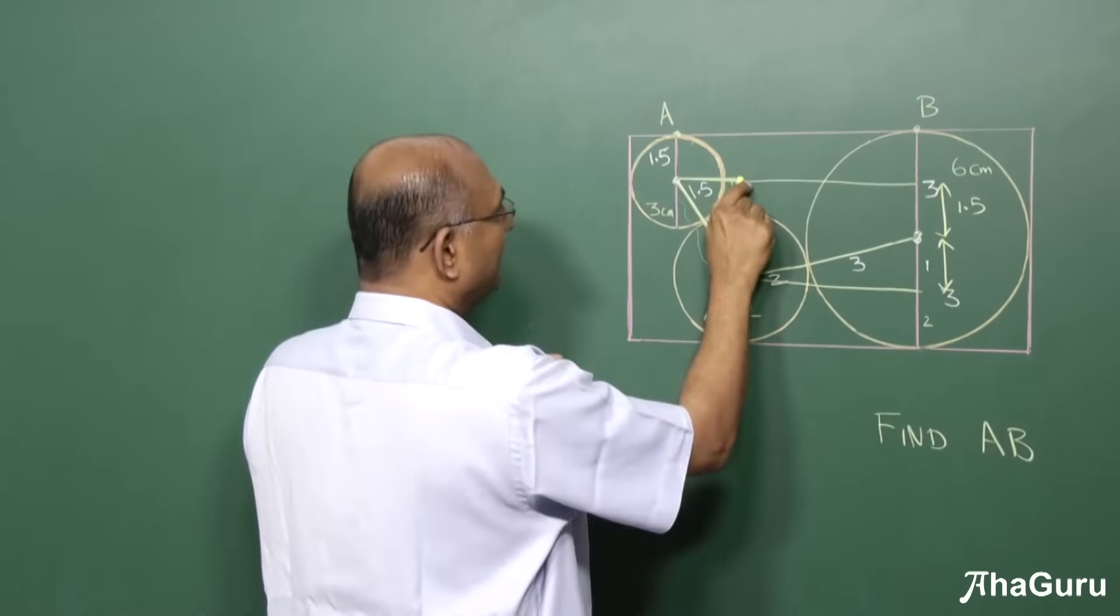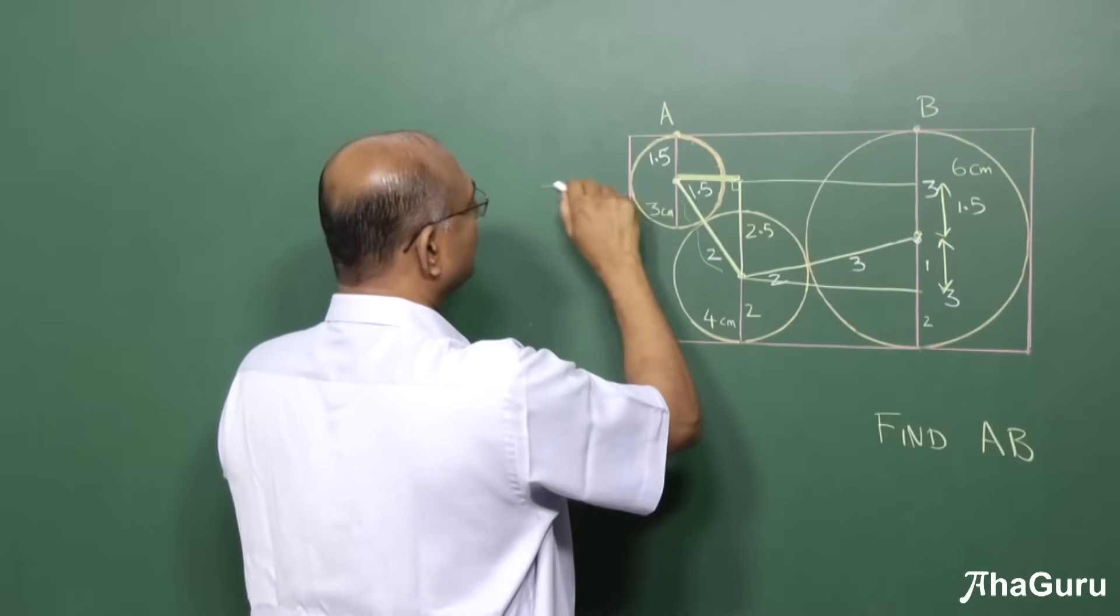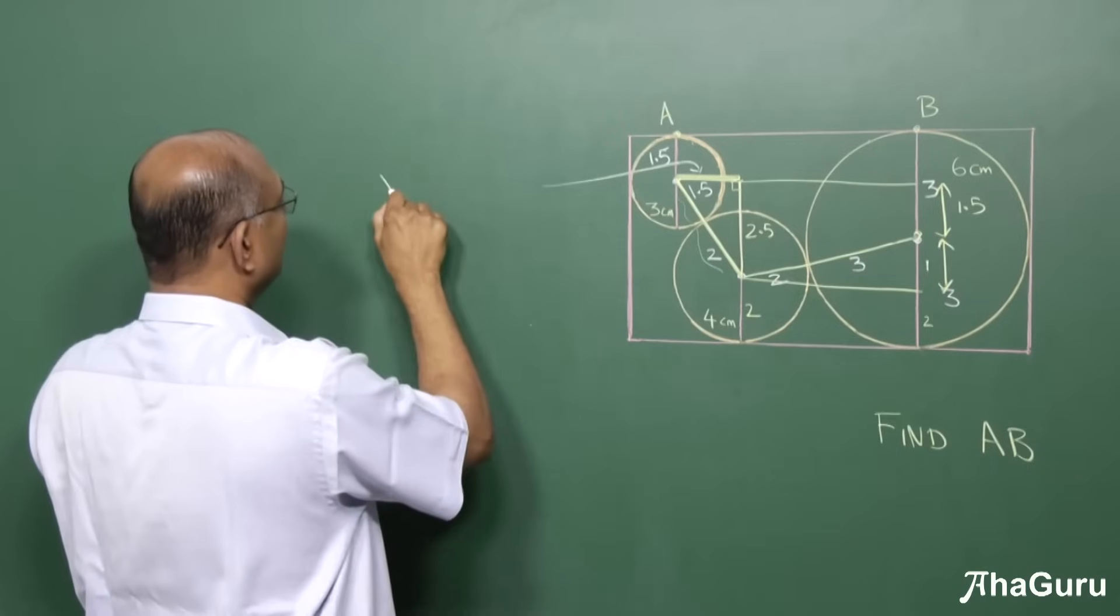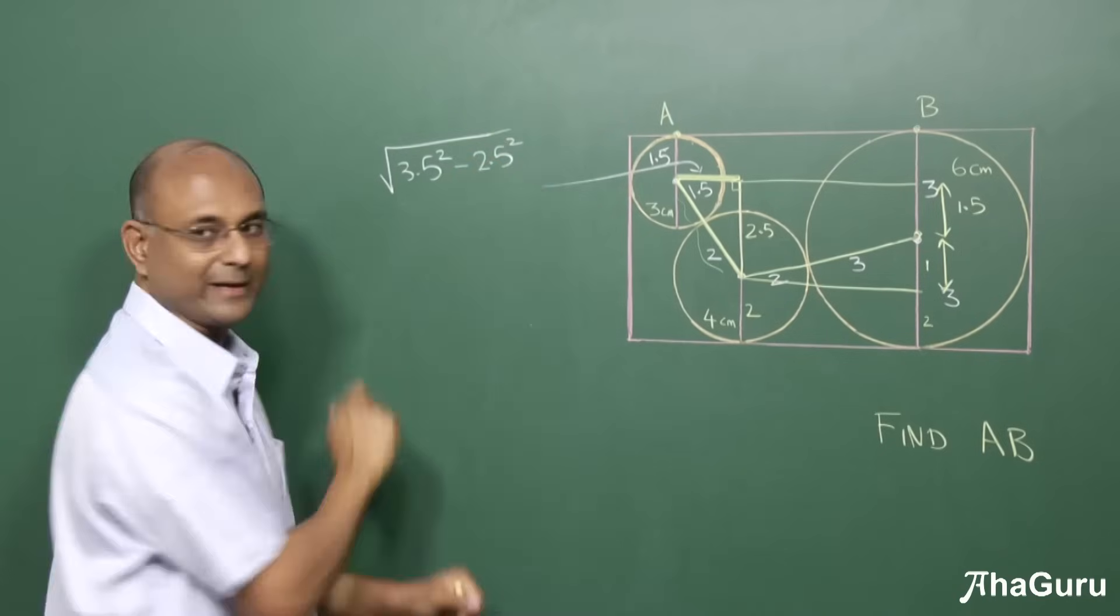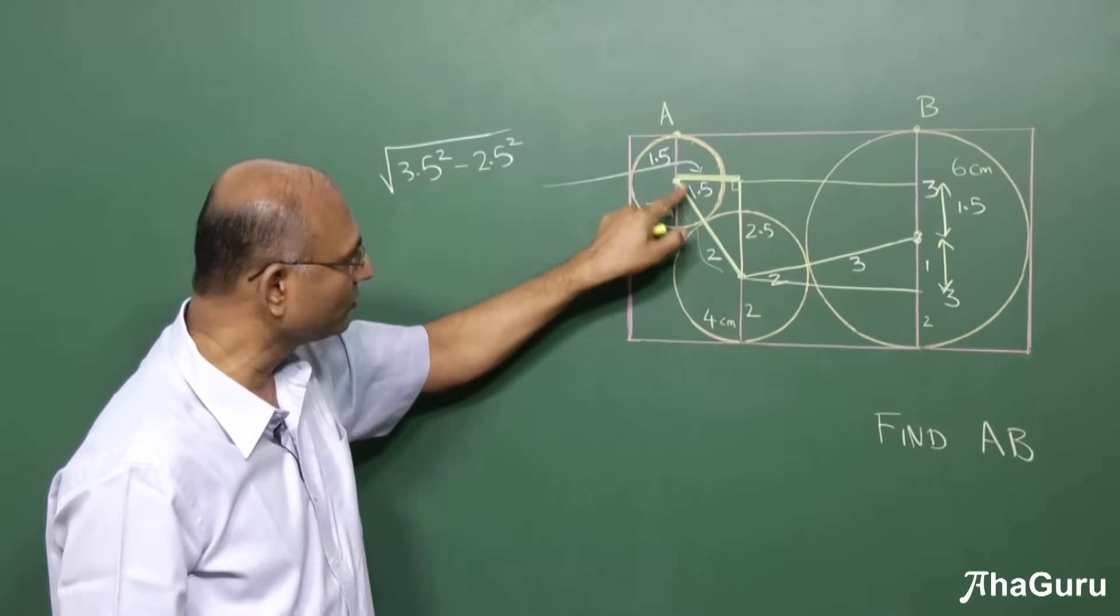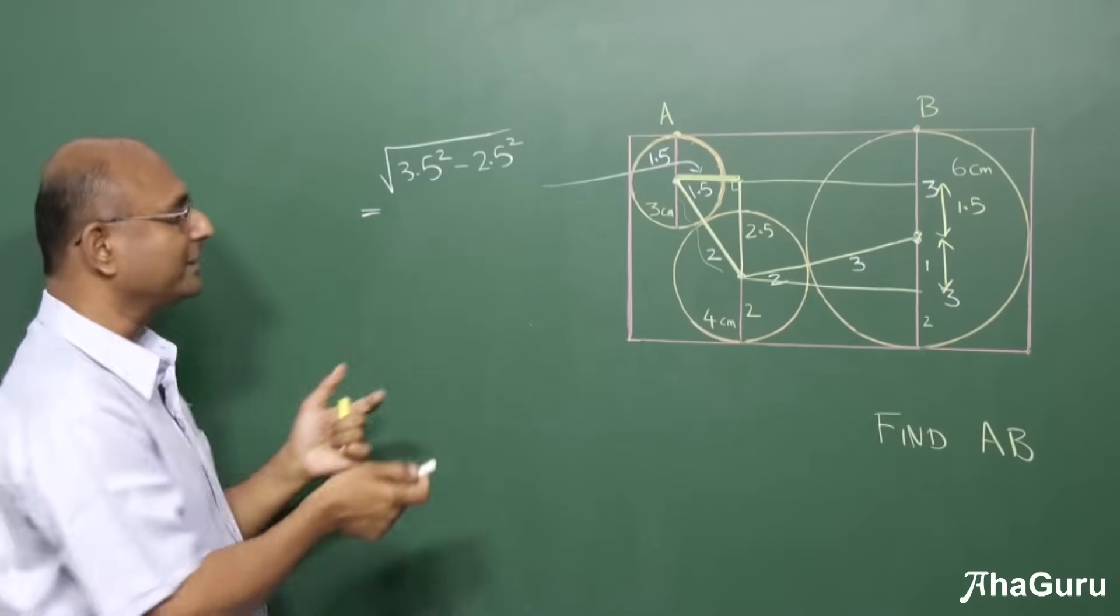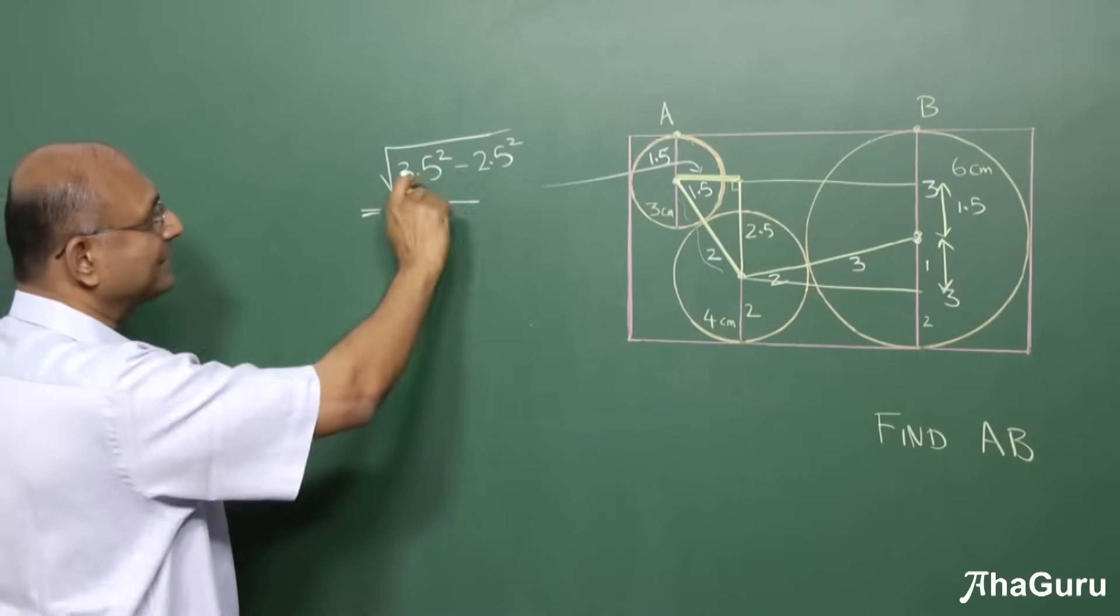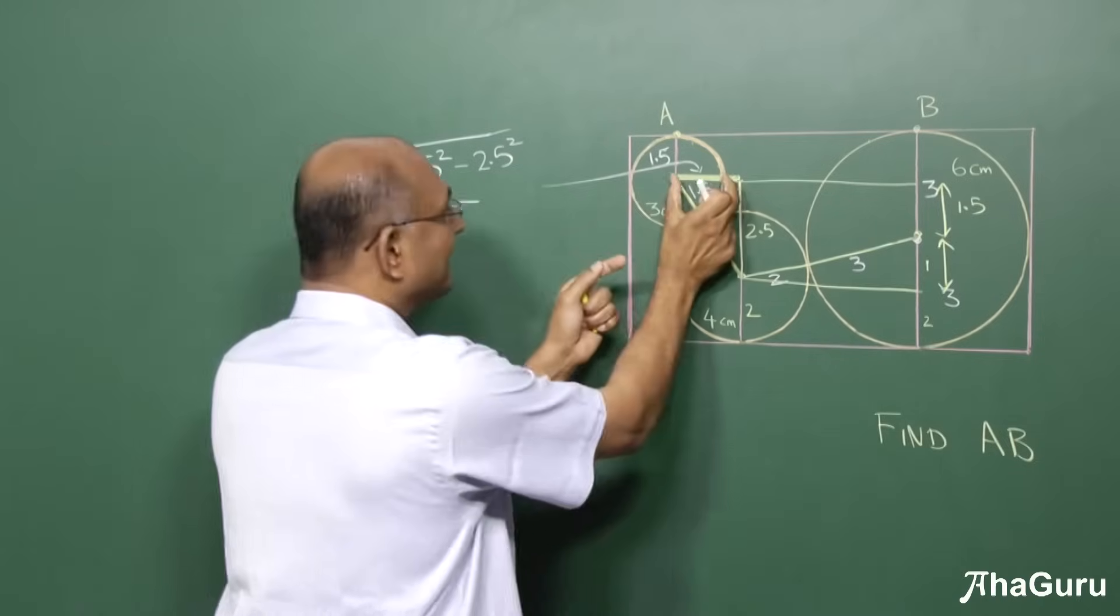So I can find this length. So the length from here to there, this length 3.5, 2.5, so it must be root of 3.5 squared minus 2.5 squared. Because this squared plus this squared must be 3.5 squared. So 3.5 squared minus 2.5 squared. How much is this? We have b squared minus a squared, so root of b minus a into b plus a. b minus a is 1, b plus a is 6. So this is root of 6. So that means this length is root 6.